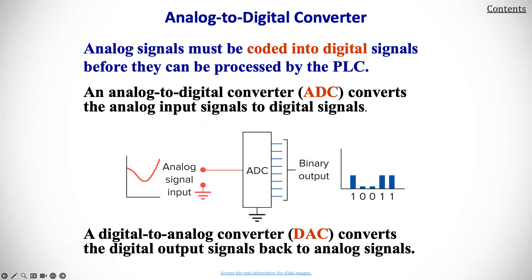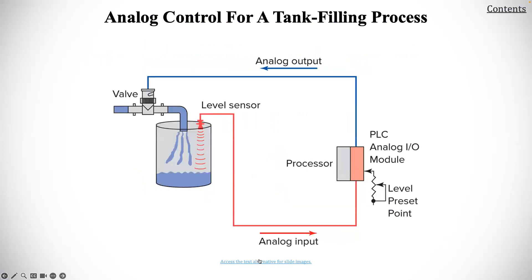Analog signals must be coded into digital before they can be processed. An analog-to-digital converter, or ADC, converts the analog input to digital signals. A digital-to-analog converter, or DAC, converts in the opposite direction — digital output signals back to analog signals. An example shown here is an analog controller for a tank fill process, where as the tank fills up to the sensor, the valve slowly closes.